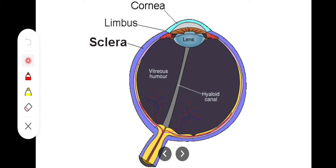The sclera is fused posteriorly with the dura mater sheath of the optic nerve, and anteriorly it is continuous with the cornea.